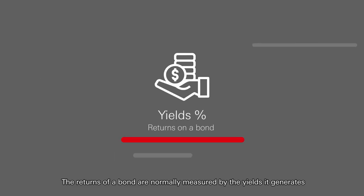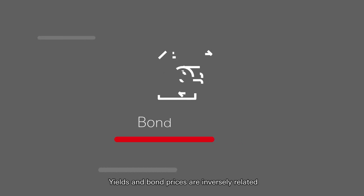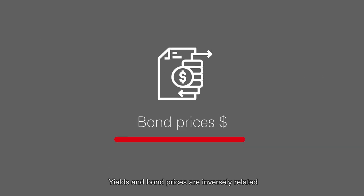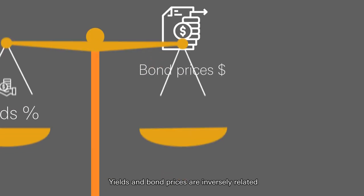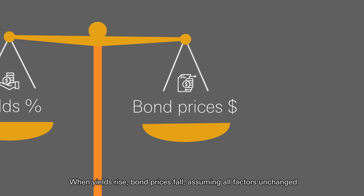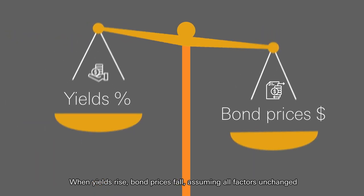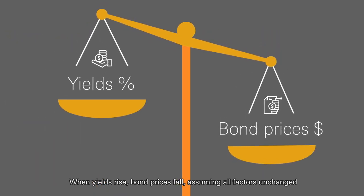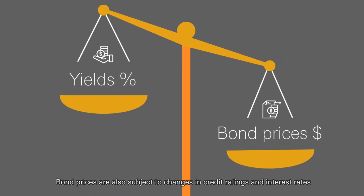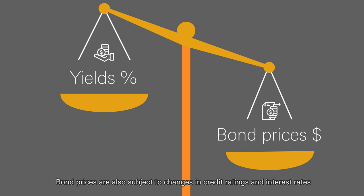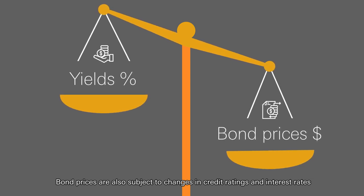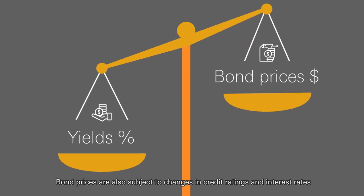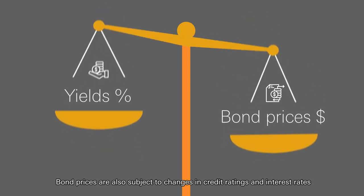The returns of a bond are normally measured by the yields it generates. Yields and bond prices are inversely related. When yields rise, bond prices fall, assuming all factors unchanged. Bond prices are also subject to changes in credit ratings and interest rates.